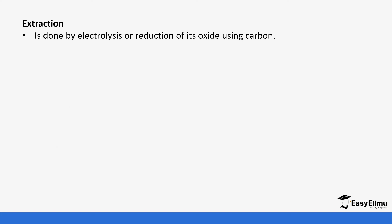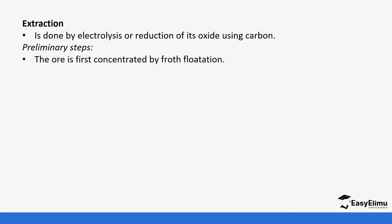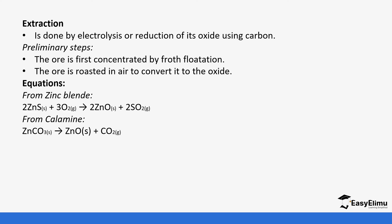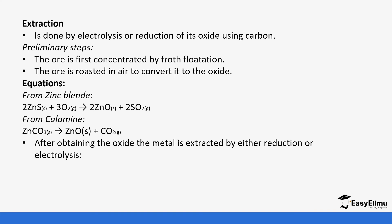Extraction of zinc is done by electrolysis or reduction. The steps before extraction include concentration by froth flotation and roasting. The ore is roasted in air to convert it to an oxide — for zinc blende (zinc sulfide), zinc reacts with oxygen to form zinc oxide, and sulfur reacts with oxygen to form sulfur dioxide. Carbonates are decomposed to form zinc oxide and carbon dioxide.